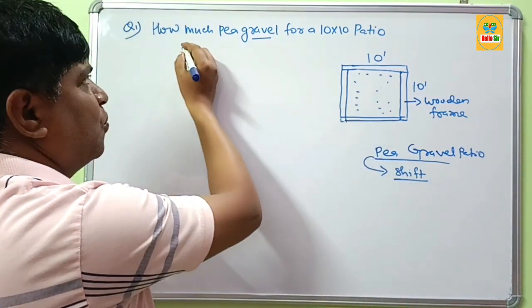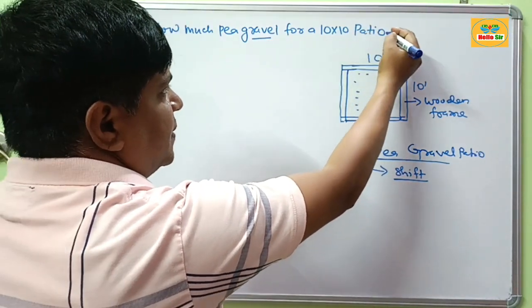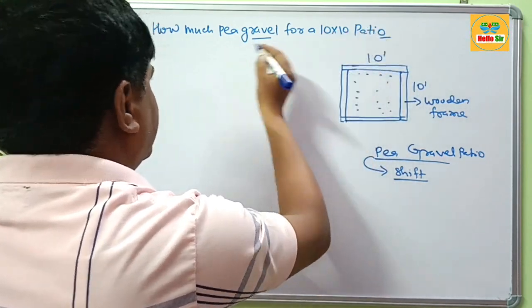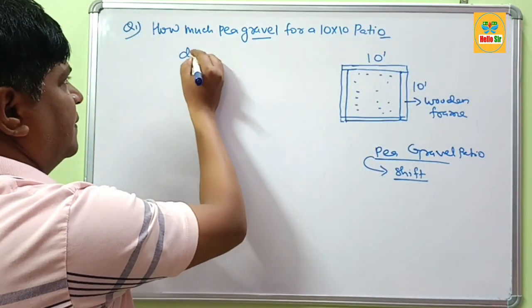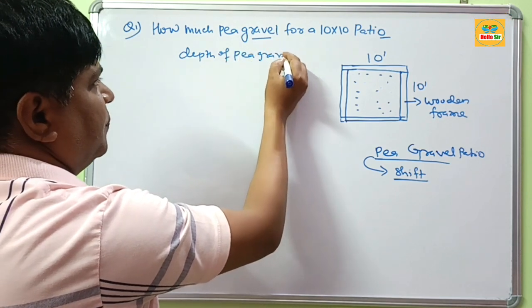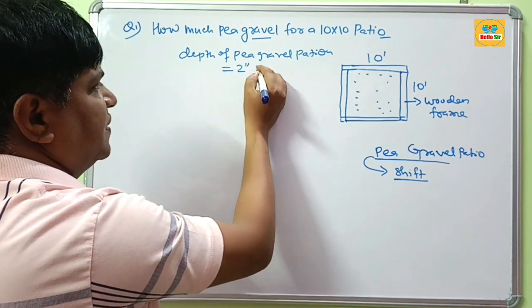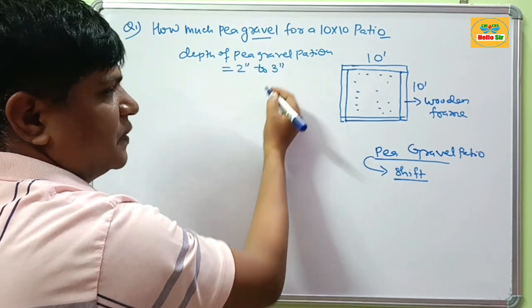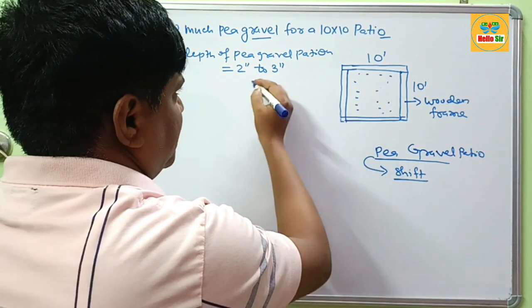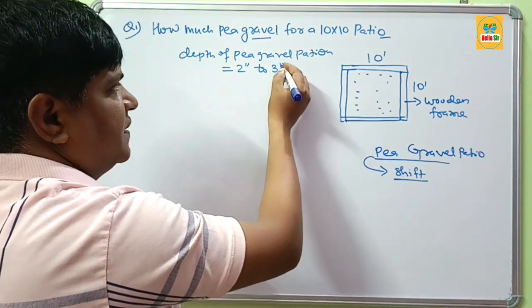Now come to the topic: how much big gravel do I need for a 10x10 patio? And the depth of big gravel patio should be minimum about 2 inches to maximum about 3 inches. And suppose, here in this calculation, the depth of big gravel is 3 inches.